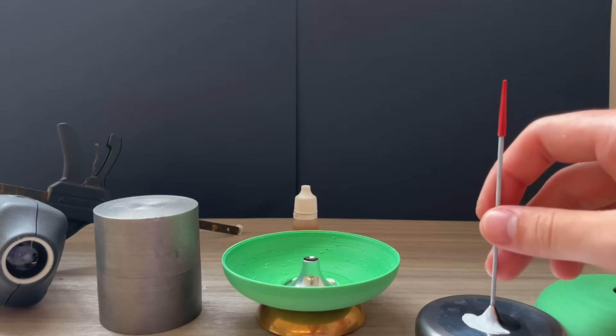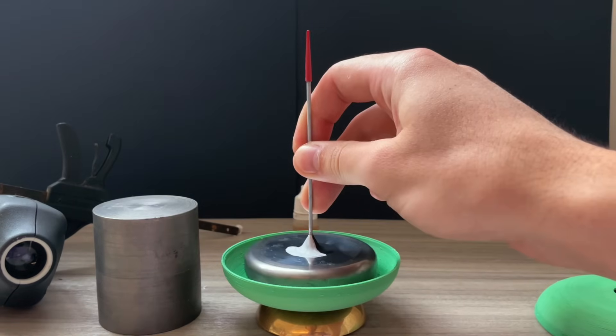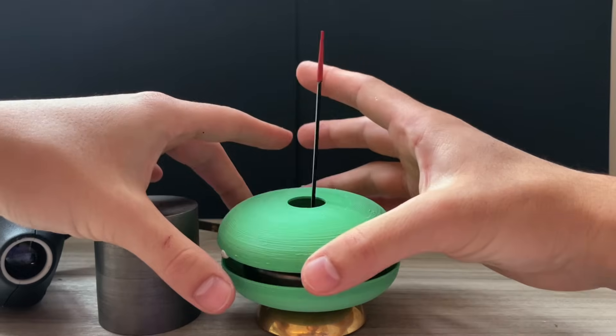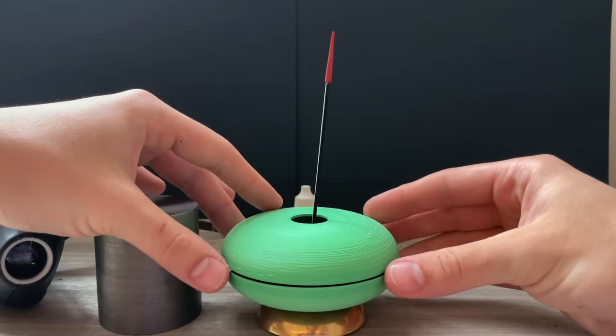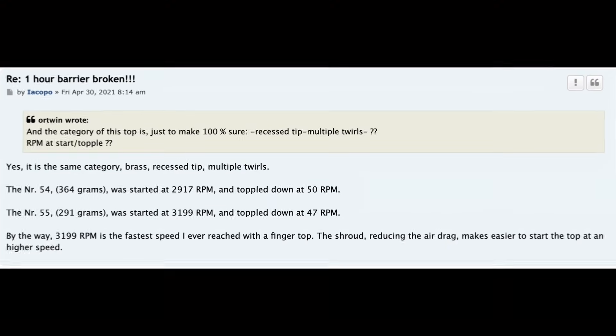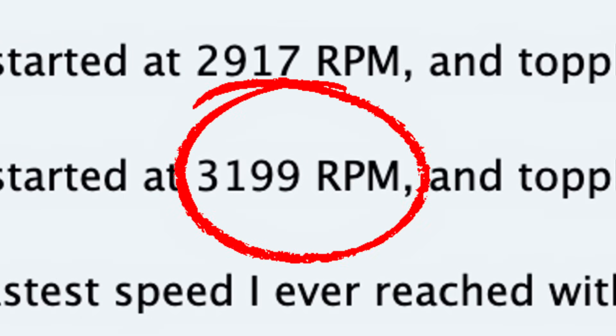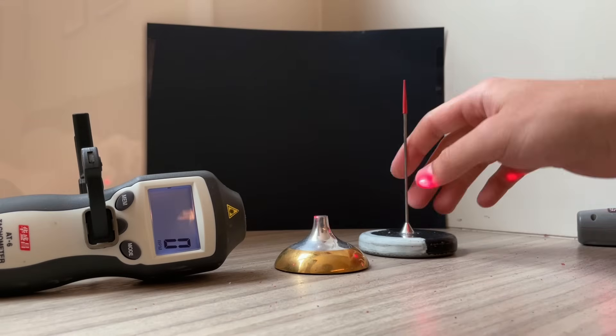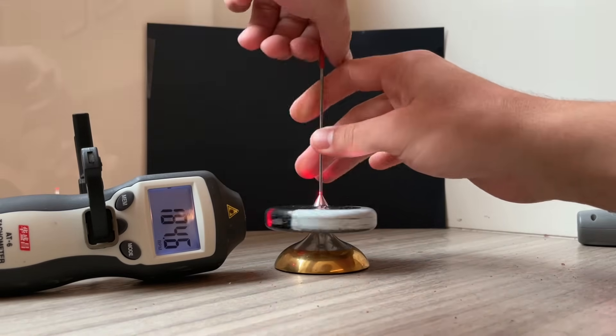There is one more thing I wanted to do in this video, and that is to break the record for the fastest handspun top. This isn't an official category or anything, and it's difficult to find a number online. But after some research for tops roughly my size, it looks like 3199 RPM is the fastest. Now that's crazy fast, but I have some tricks up my sleeve to help me achieve it.